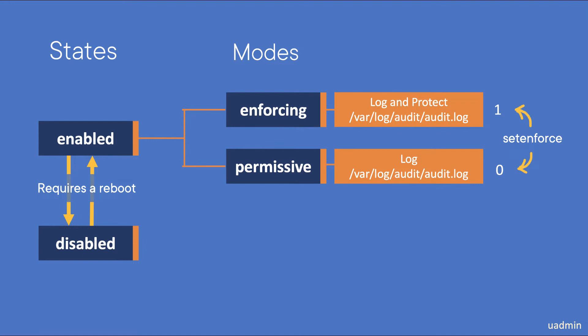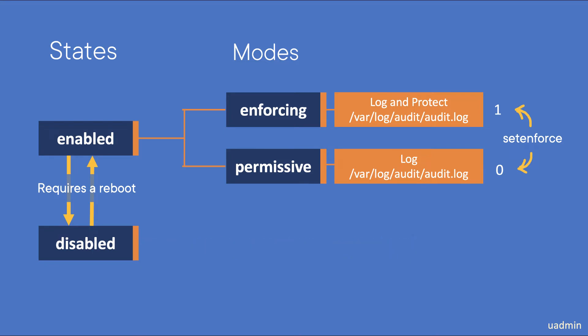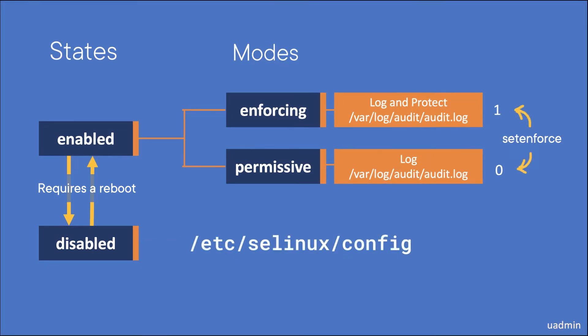To change between the disabled and enabled states you will have to reboot your system. It's important to realize that when you disable SELinux, all new files will not have a label. So if you enable it again, all these files will have to be labeled. In short, it's simply not a good idea to disable SELinux. The file that configures all of this is the config file in /etc/selinux.